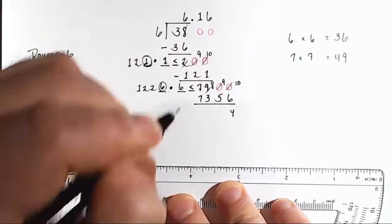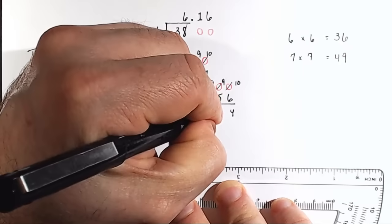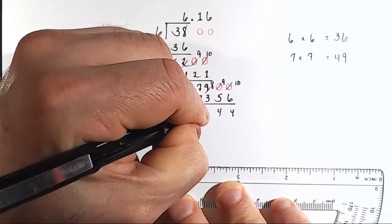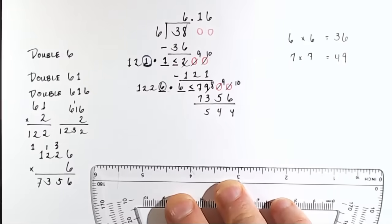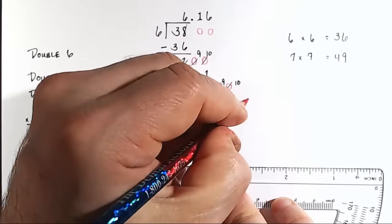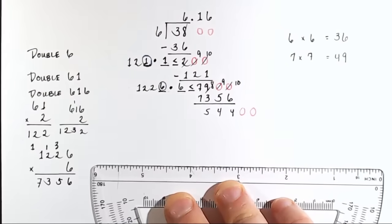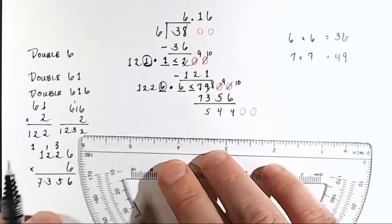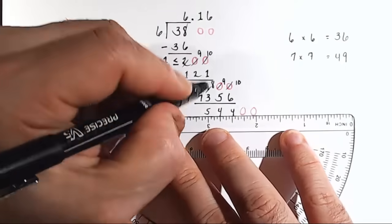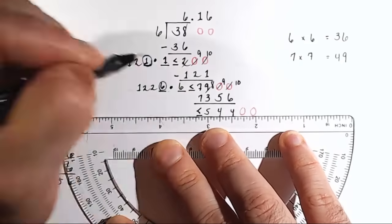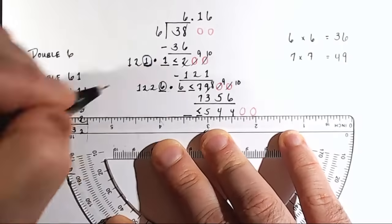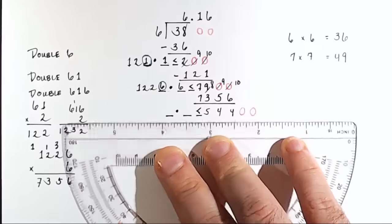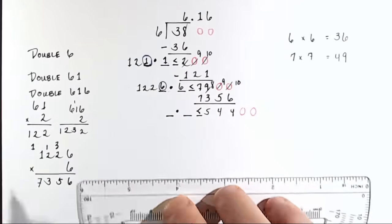Okay? So 10 minus 6 would be 4. 9 minus 5 would be 4. 8 minus 3 would be 5. And that's it. So then we would bring down two more digits. And now we would be looking at 54,400. And we would put less than or equal to symbol, number, multiplication symbol, number, and then we would write 7, 3, 5, 6.